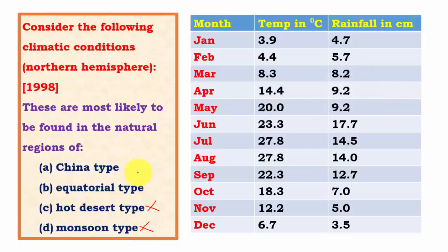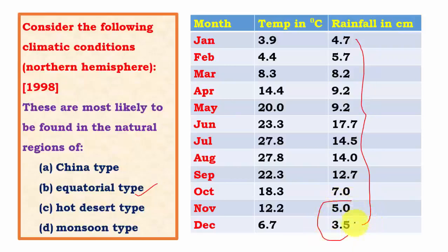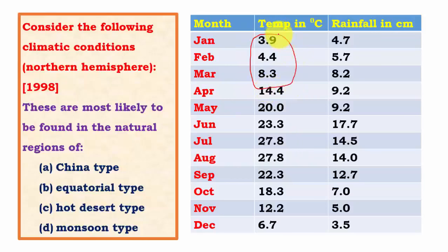In China type, summers are warm, winters are mild, and rainfall is well distributed throughout the year with summer maximum. The graph shows temperatures quite low during winter and quite high during summer. In equatorial type, rainfall is well distributed, but here months like November, December, and January have rainfall below 6 cm. Remember that in equatorial regions, not more than one month has rainfall below 6 cm. Also, in equatorial type the daily temperature never falls below 18 degrees Celsius, but the graph shows some months below 18 degrees. So the answer is clearly China type.